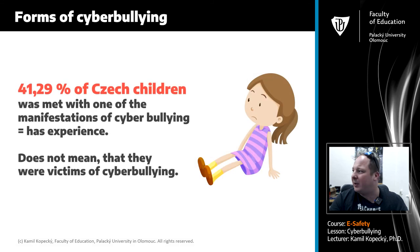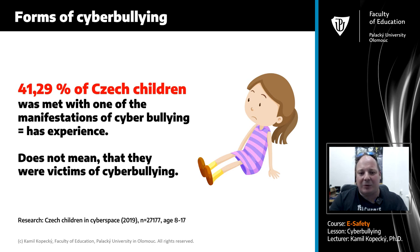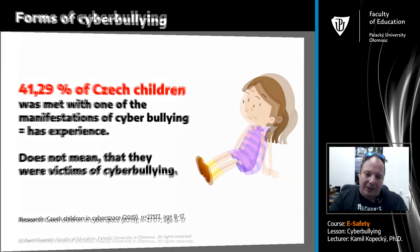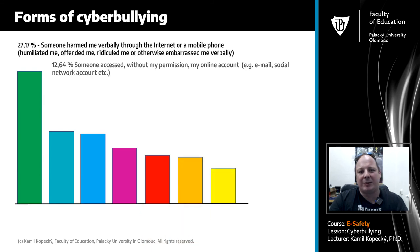Many researchers work with numbers of cyberbullying versus cyber aggression. In the Czech Republic, about 41 percent of Czech children have encountered one of the manifestations of cyberbullying — they have experienced it. But this doesn't mean they were victims of cyberbullying. This is why the number is so large: it reflects experience with any form of online aggression, not real cyberbullying. In 2019 we conducted research: Czech Children in Cyberspace.